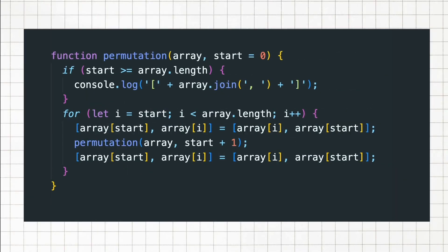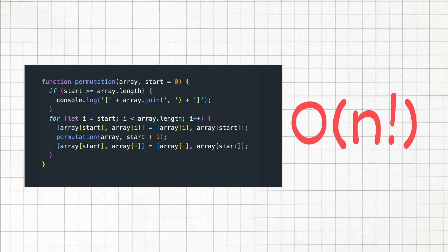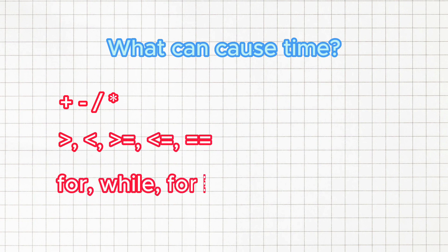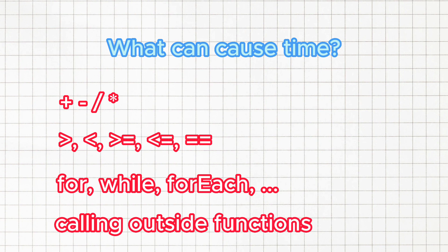And this other function generates all permutations of an array. For each element it swaps it with the next element and then recurses for the remaining elements. That's why it has factorial time complexity. Now let's discuss what could cause time in a function. This could be the result of operations like addition or subtraction, comparisons like greater than or less than, looping constructs like for or while and calling outside functions.